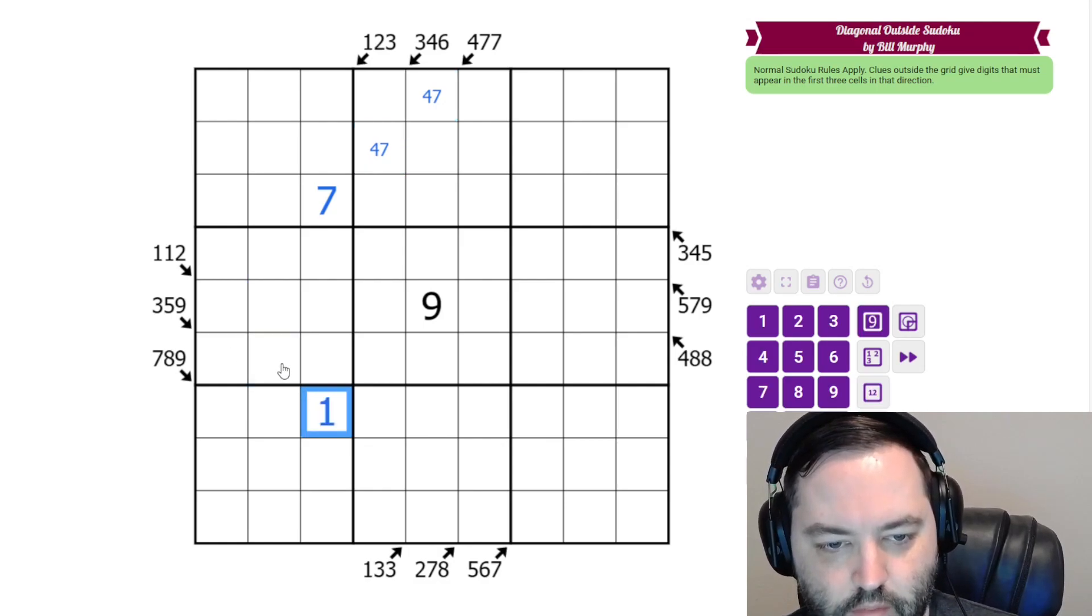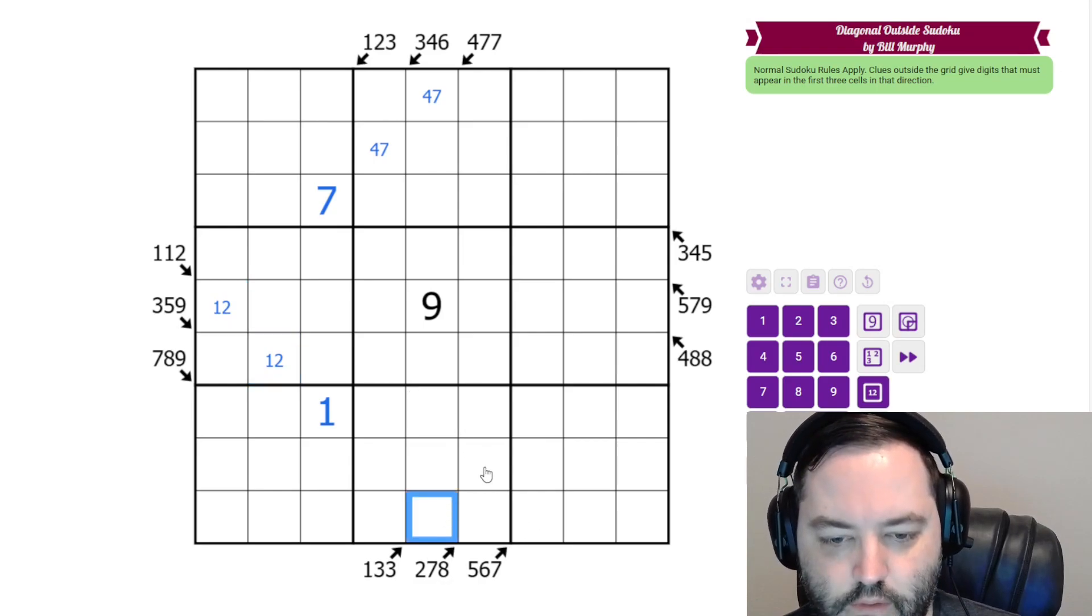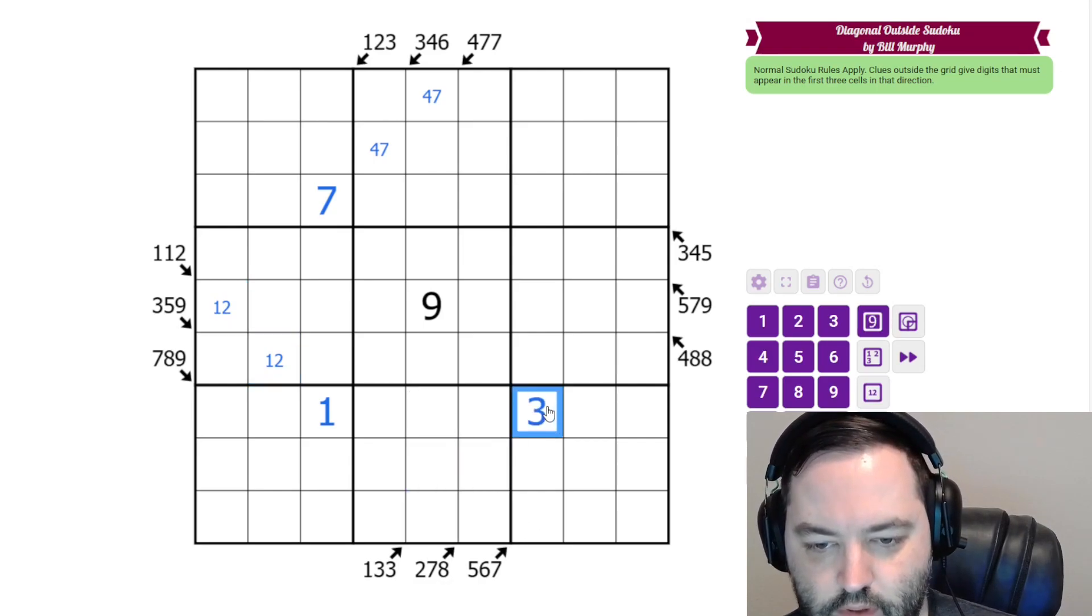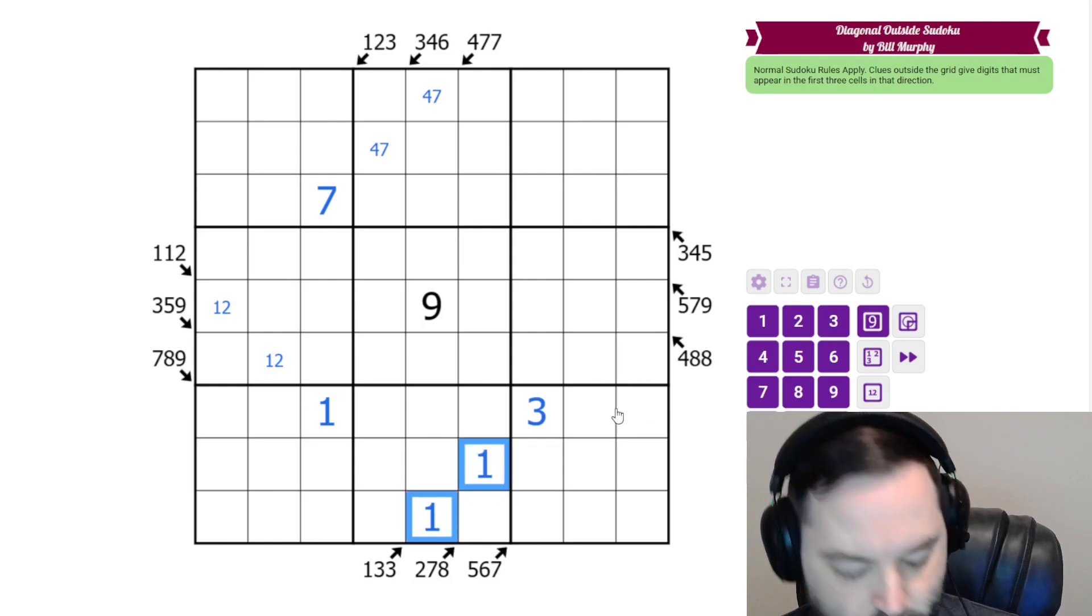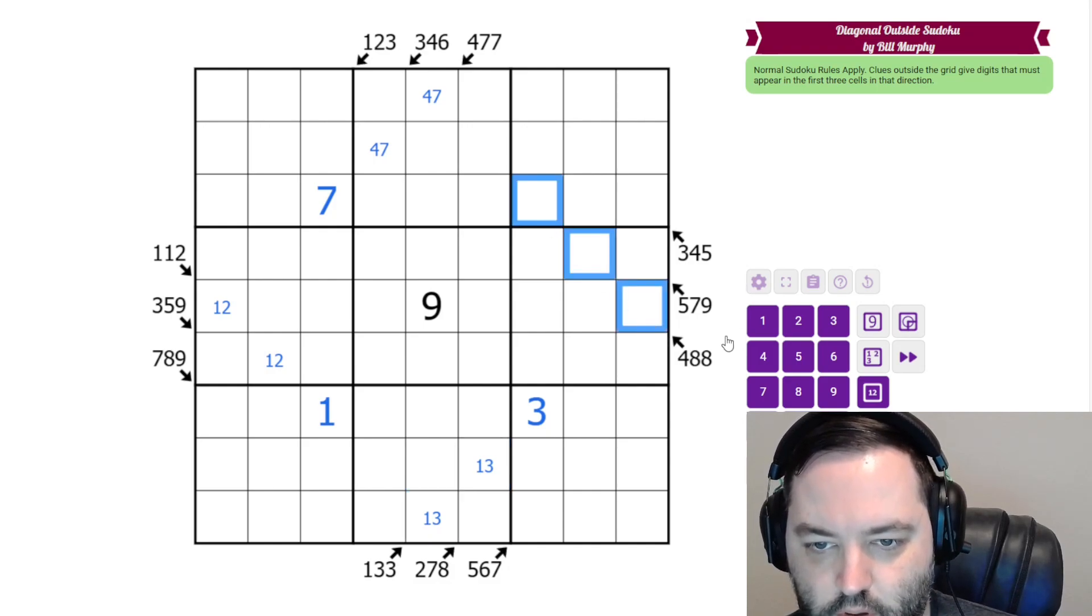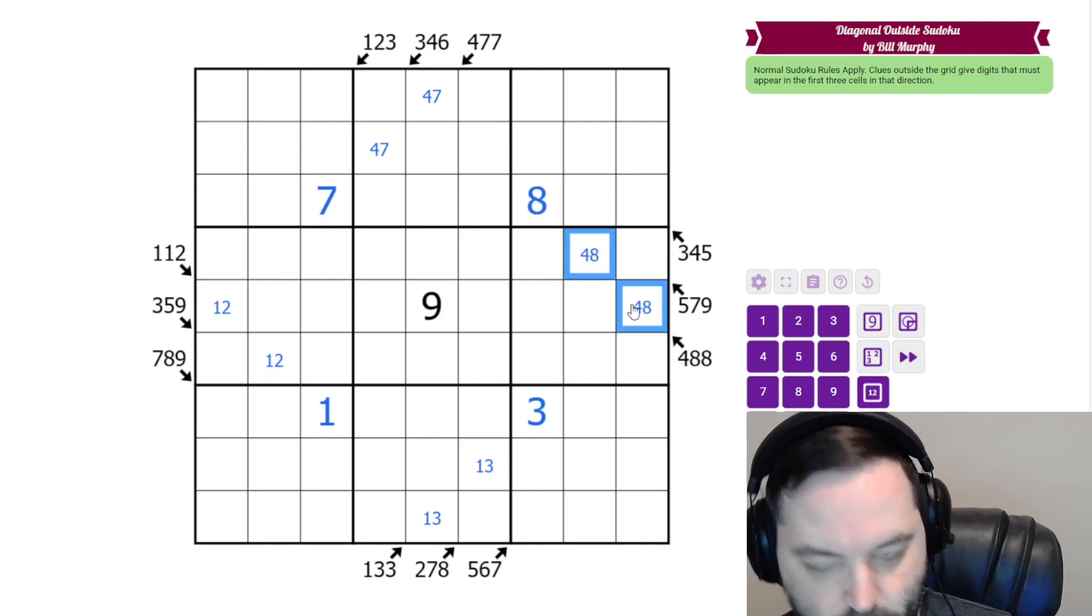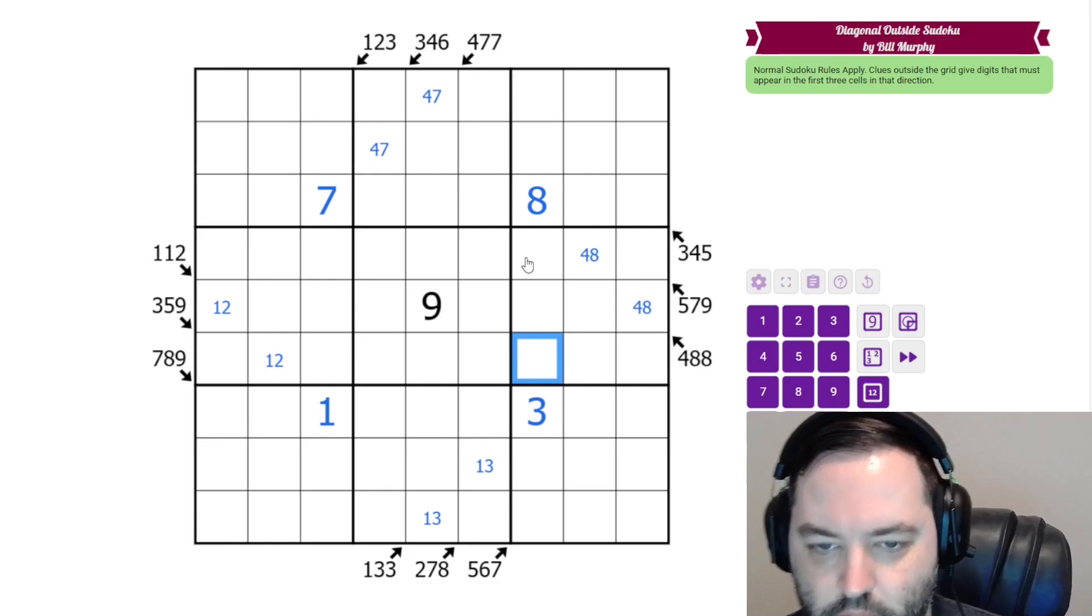On this clue, this has to be a 1, because 1 repeats. On this clue, this has to be a 3, both because the 3 repeats and because there's a 1 here. These are 4 and 8 with 8 repeated. Those are the repeated clues.